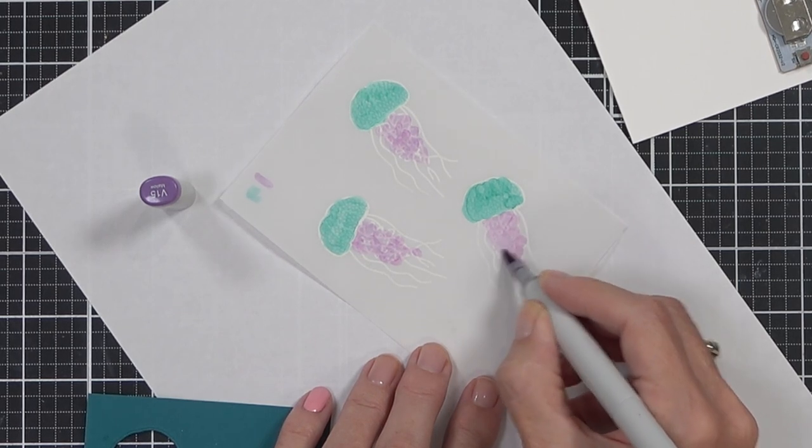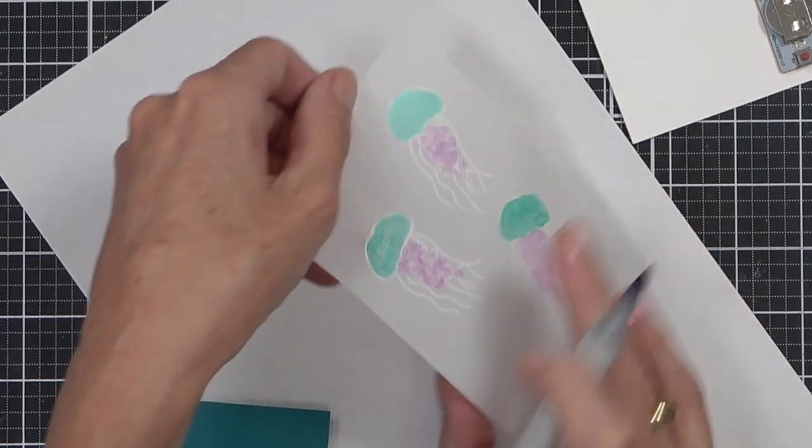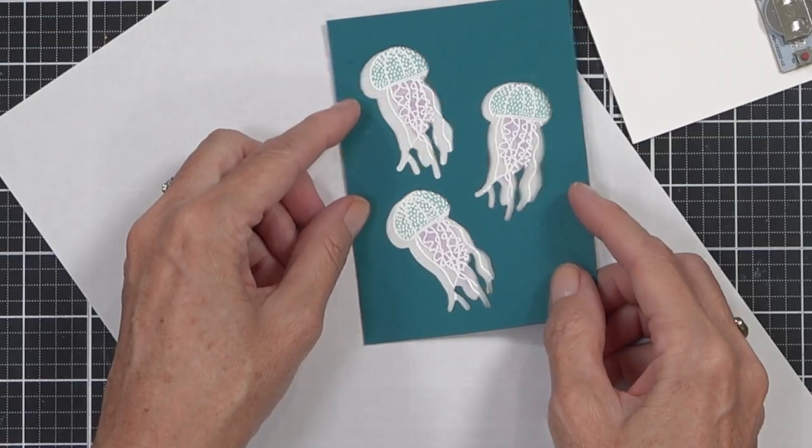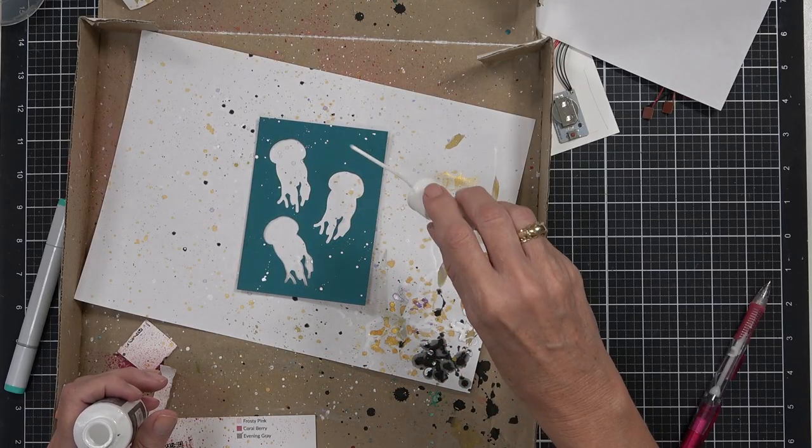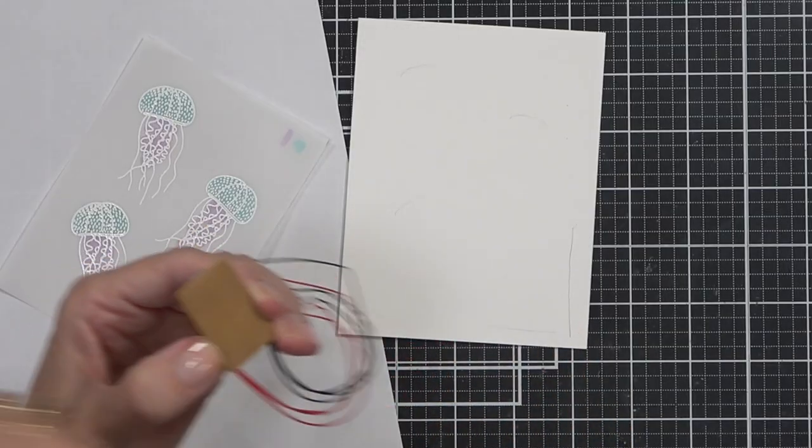I did decide to come in and add some color with some Copic markers behind the vellum. Copic markers aren't really friendly when it comes to coloring actually on embossing powder, so add your color behind. Then I wanted to add some white splatters to the card panel and I did sit that aside to try and dry it but I couldn't wait. I just had to get this card made.